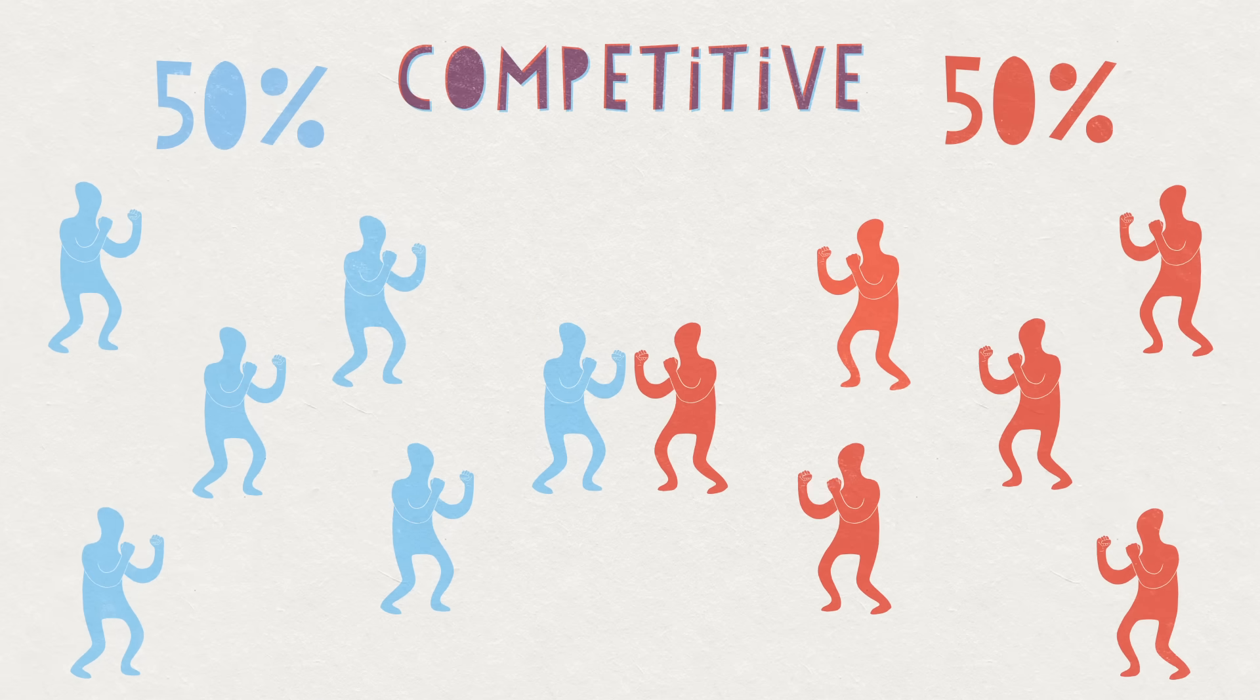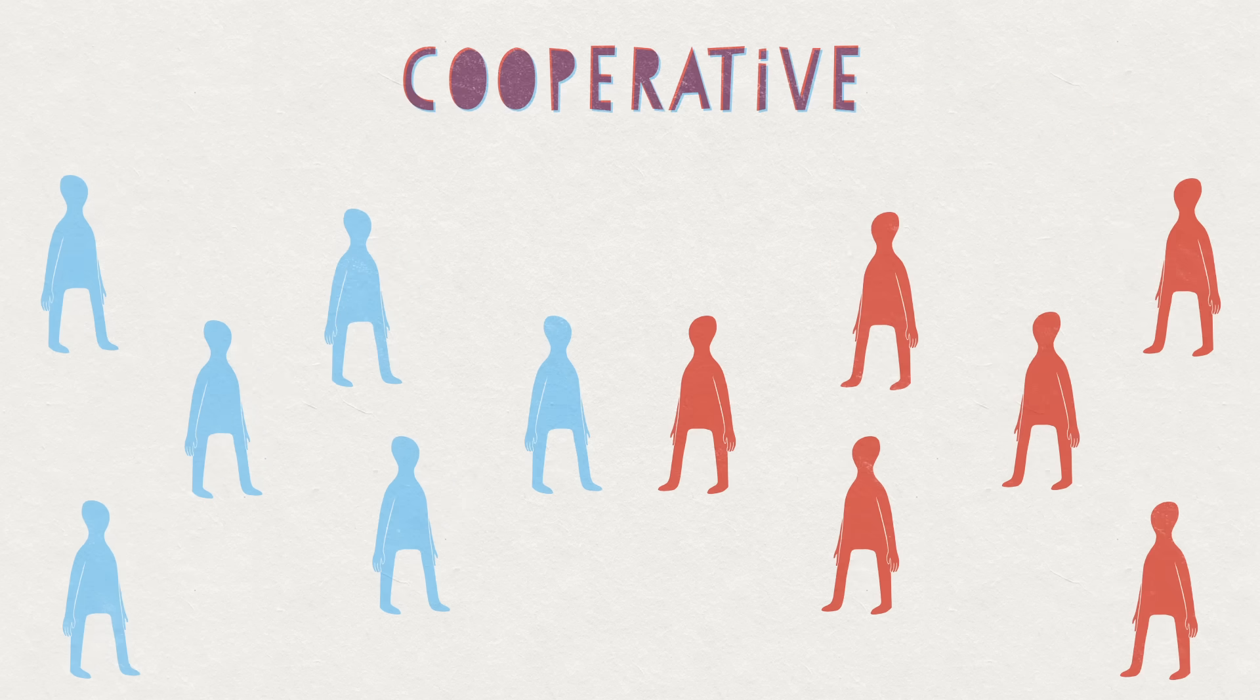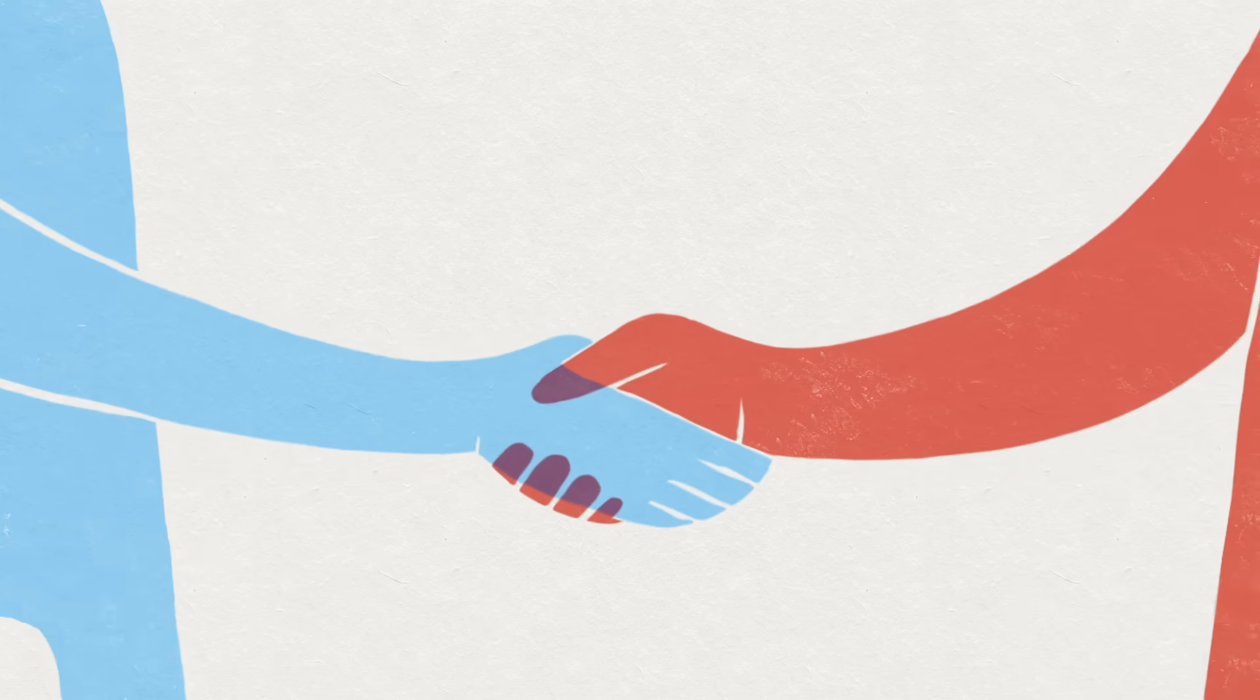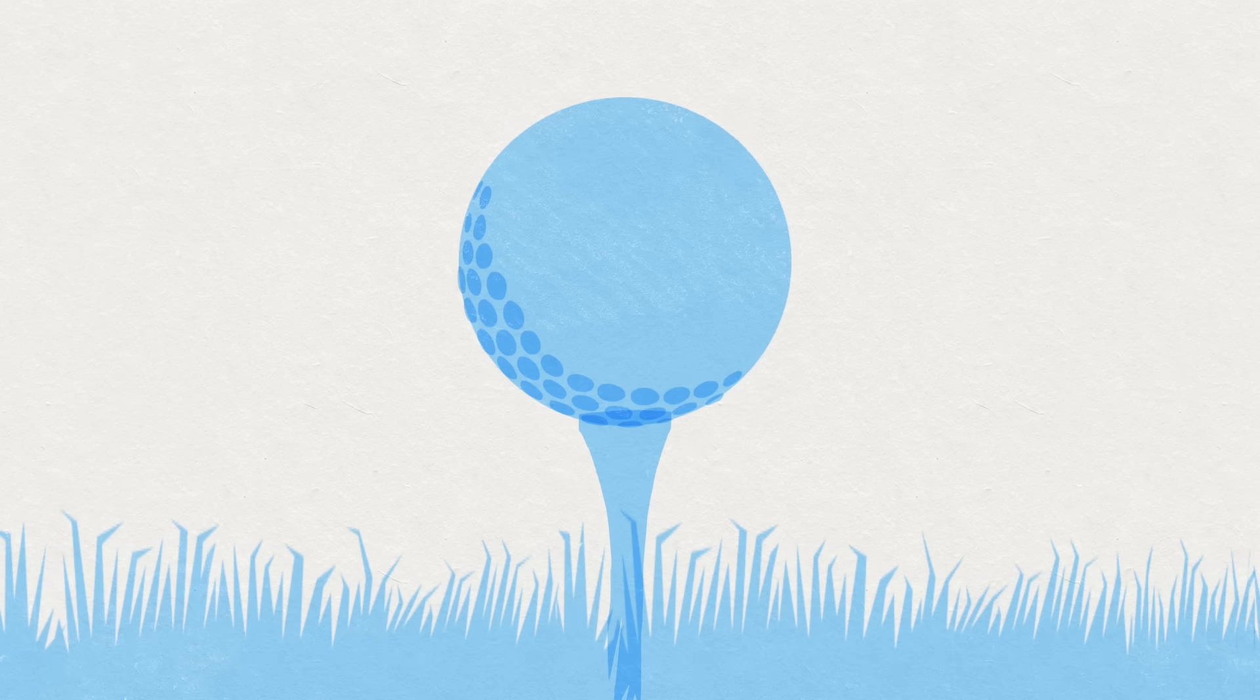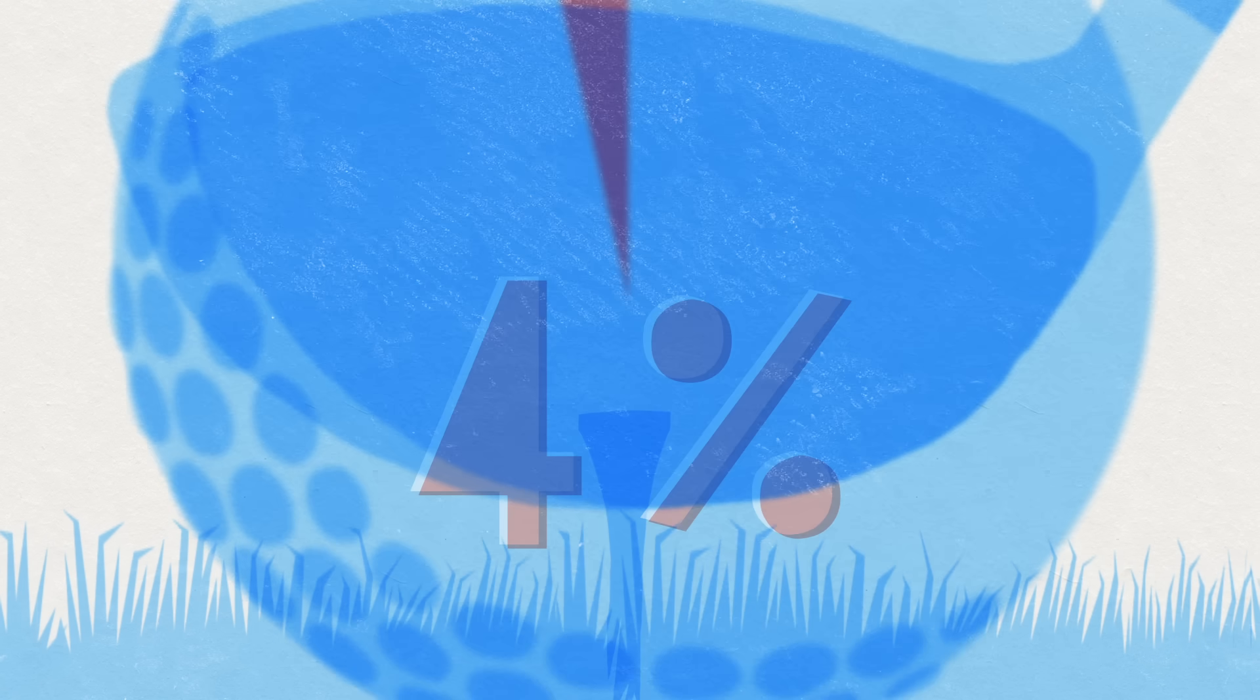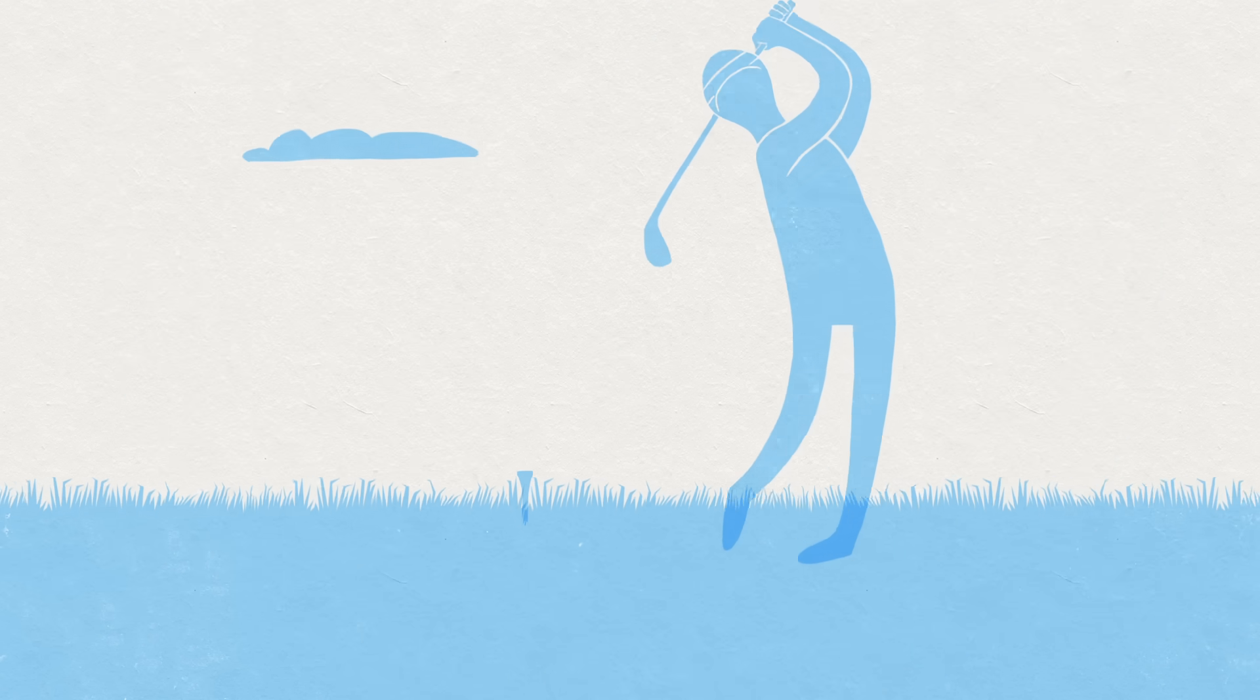But human evolution has been shaped by cooperation as well as competition, and cooperative pressure pushes handedness distribution in the opposite direction. In golf, where performance doesn't depend on the opponent, only 4% of top players are left-handed, an example of the wider phenomenon of tool sharing.